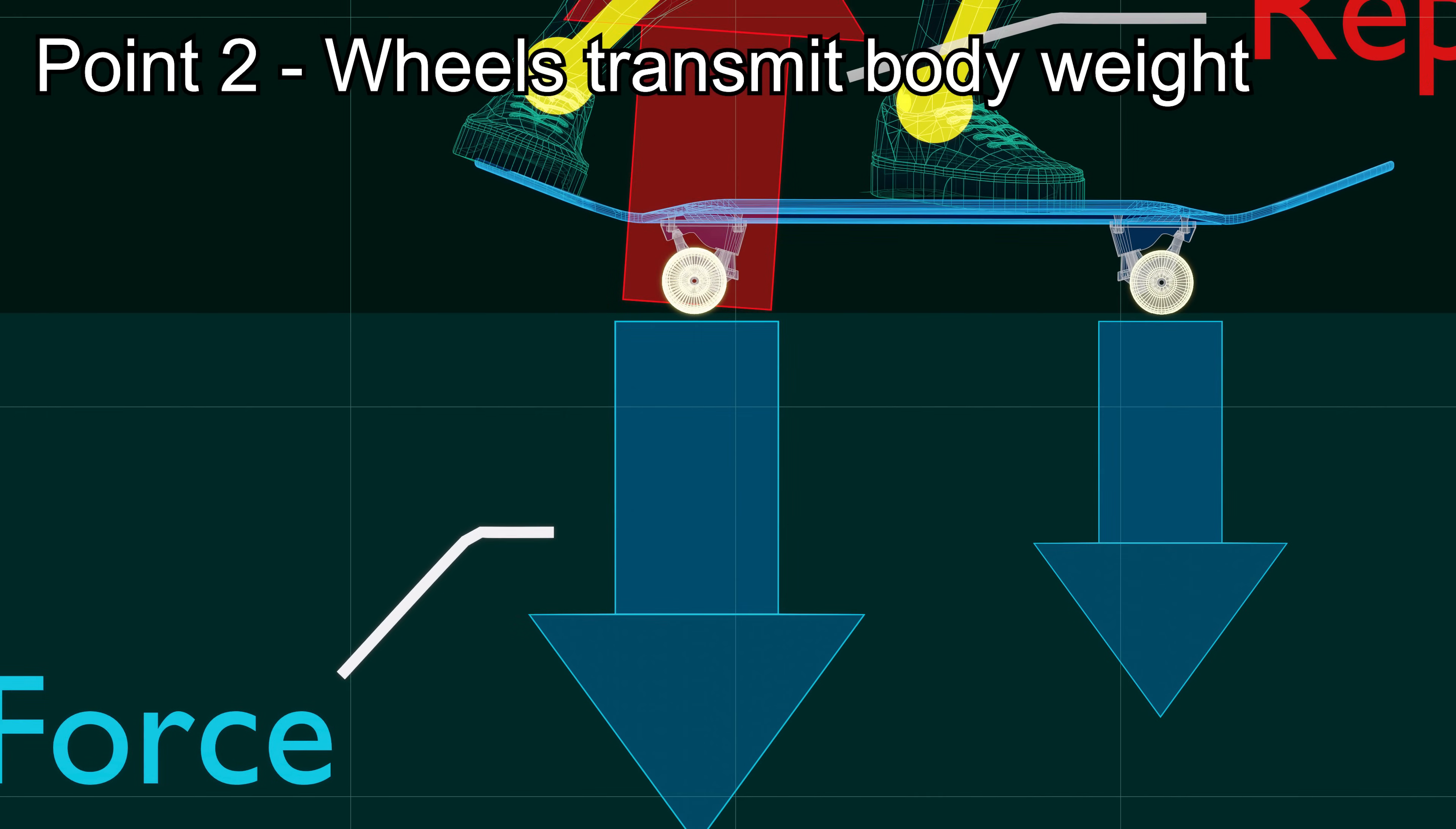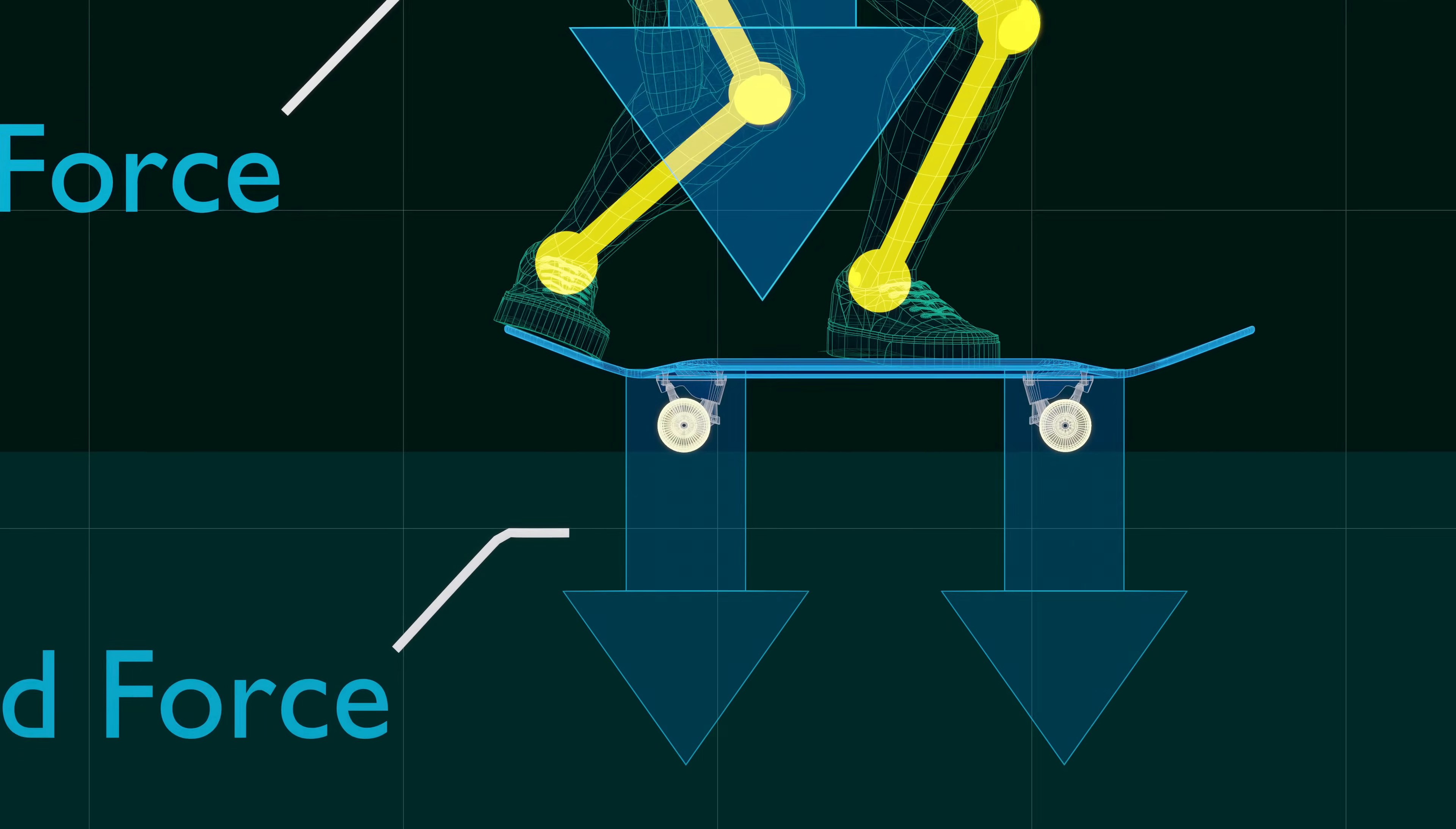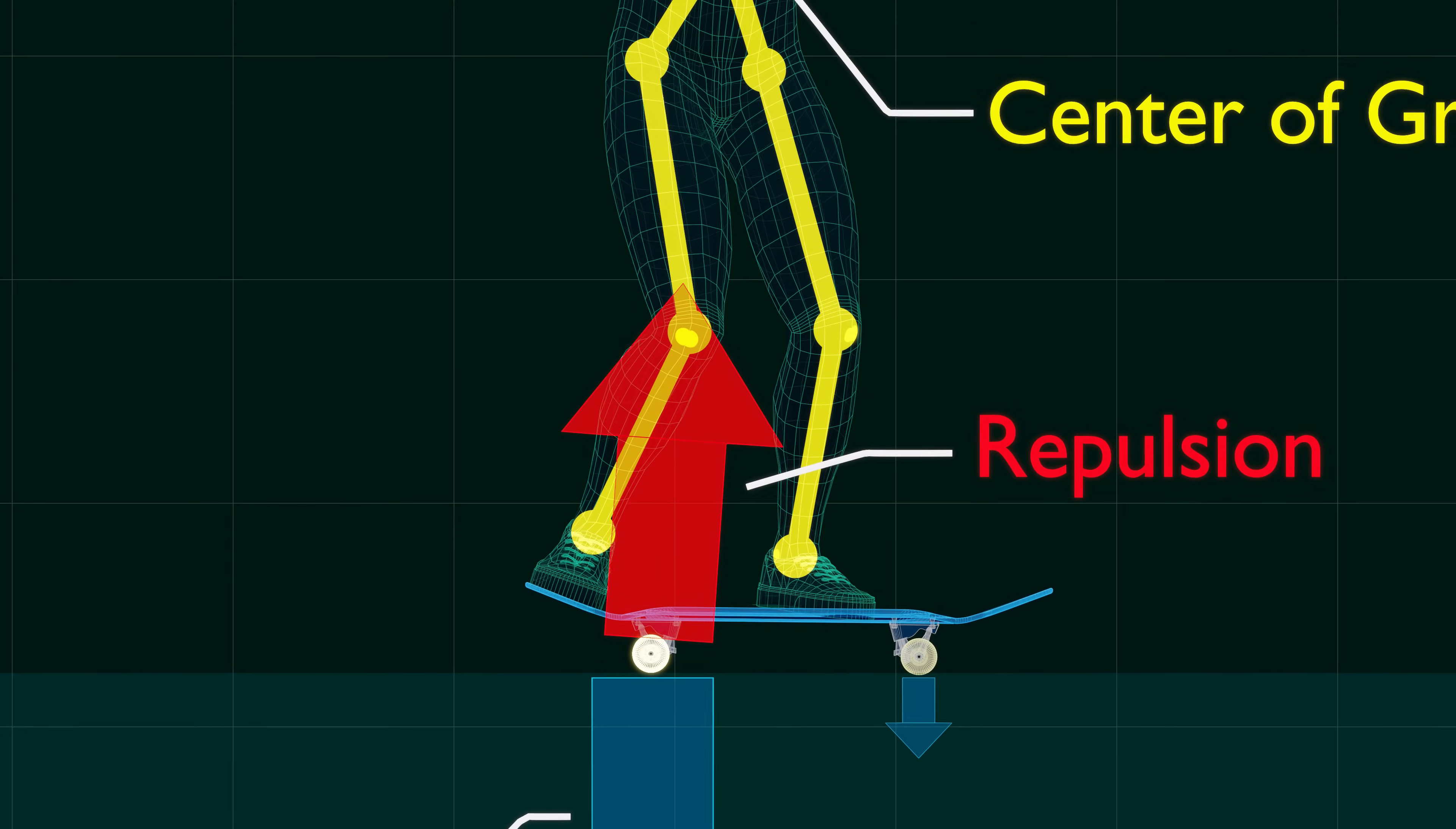Remember the second point here? It is the wheels, not the tail, that transfer your weight to the ground. The force applied by both feet to push down the board is transmitted to the ground through the wheels. The repulsion from the ground pushes back against both feet, lifting the center of gravity.